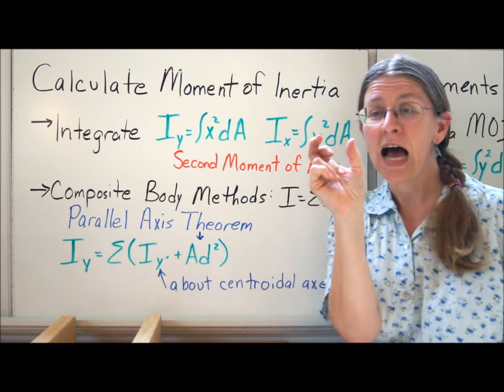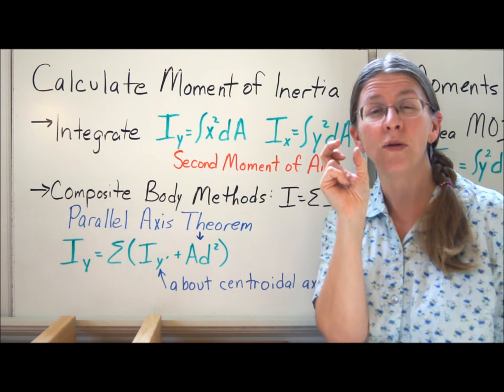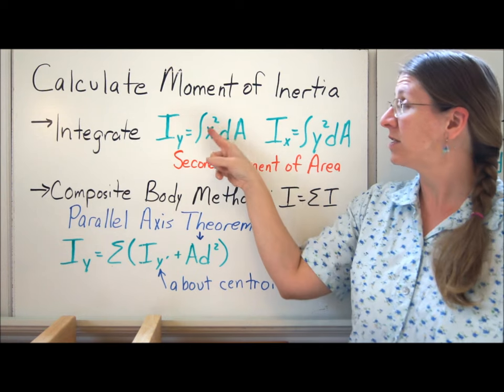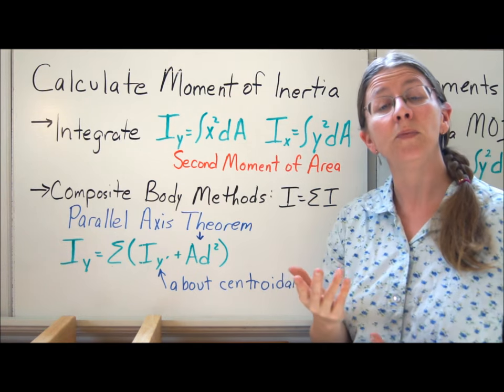Remember that when we did the centroids, the top, the numerator, was called the first moment of the area. Well, this is the second moment of the area, and the only difference is that you've got a squared there. So dA would be exactly the same.